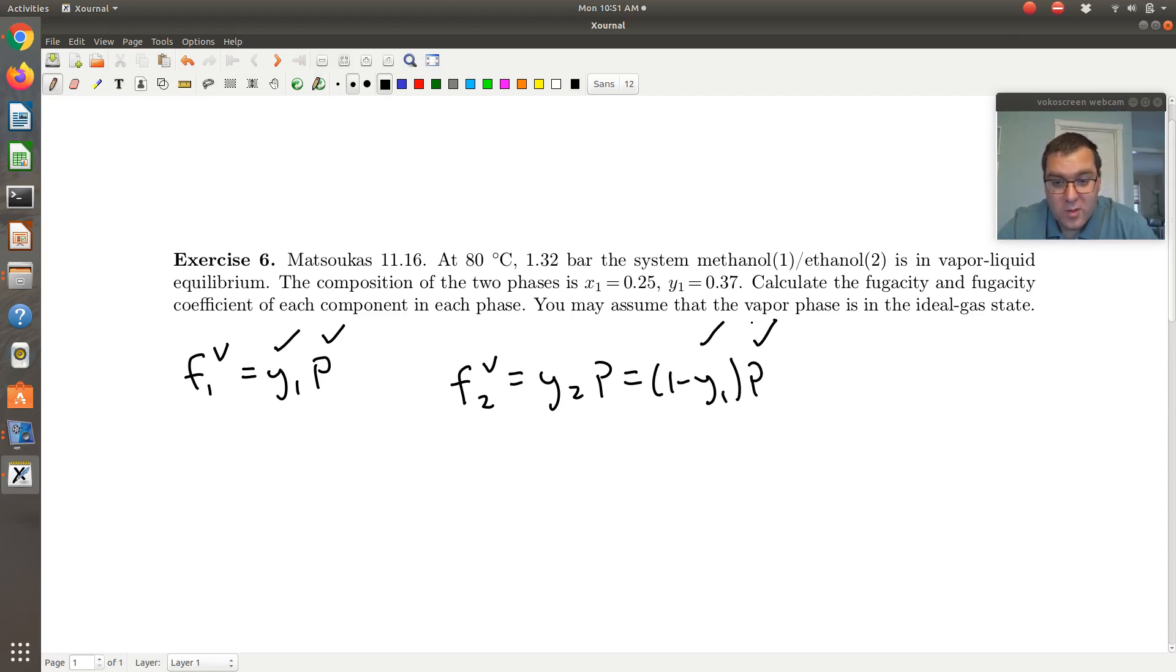So in general, F1V would be phi1V Y1P, but when we assume we have an ideal gas, or when we're told that our vapor phase could be treated as an ideal gas, that just means that phi1V is equal to 1. Likewise, we'll have phi2V is equal to 1. Cool.